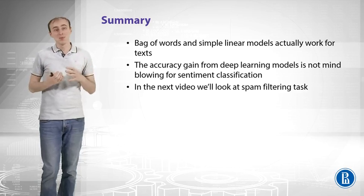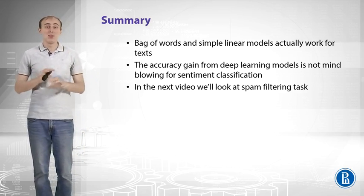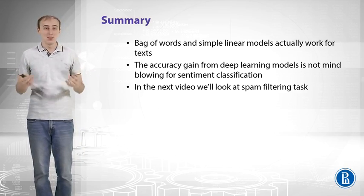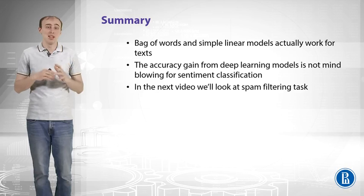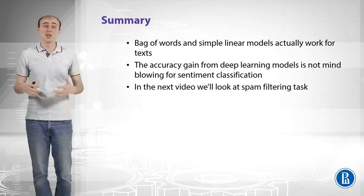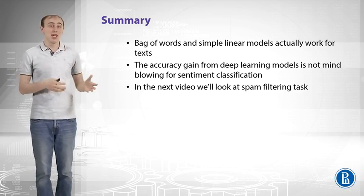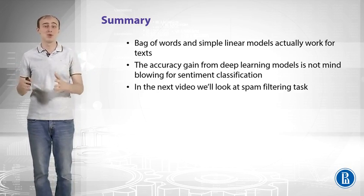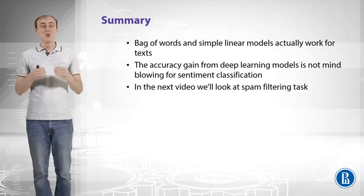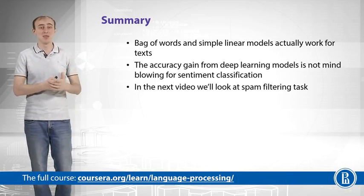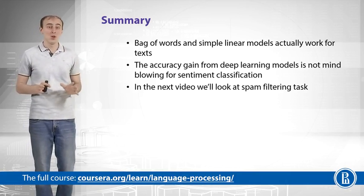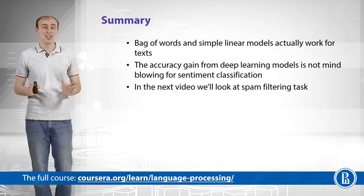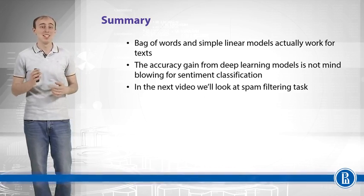To summarize: bag of words with simple linear models works well, and adding 2-grams is essentially free and yields a better model. The accuracy gain from deep learning models is not mind-blowing, but it is still there and worth considering for sentiment classification. In the next video we will look at spam filtering — another text classification task that can be handled in a different way.